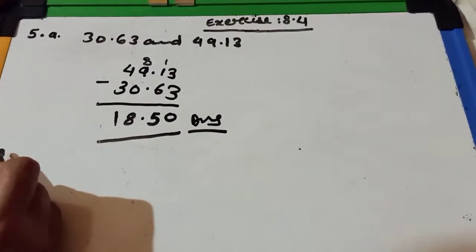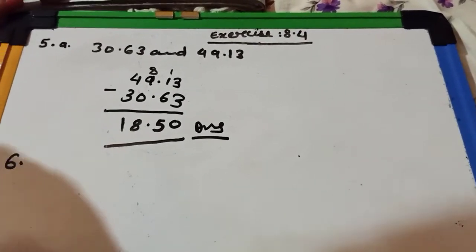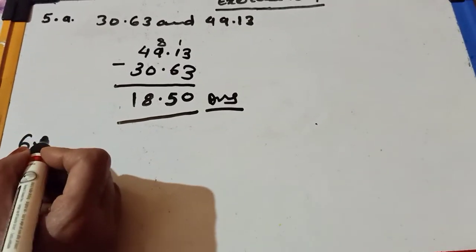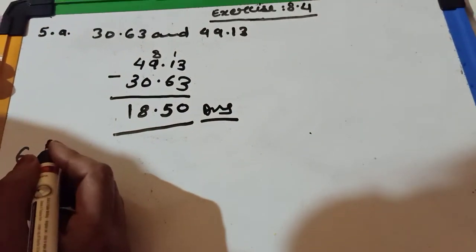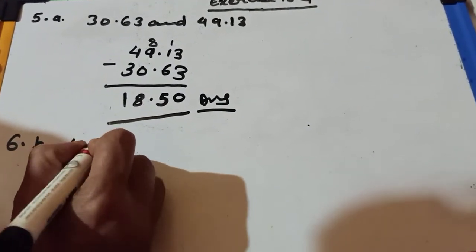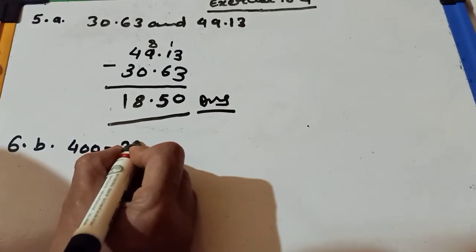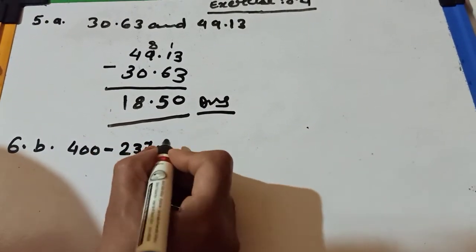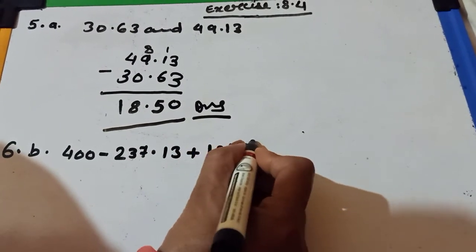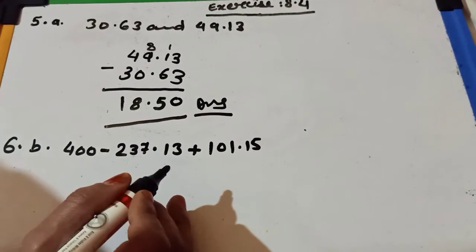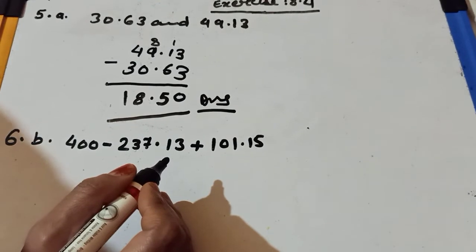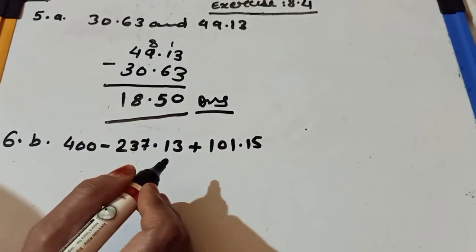Now I am taking question number 6. Find the value. It is like simplification. From this number I am taking 1B: 400 minus 237.13 plus 101.15. Children, how can we do this number? First we will take 2 numbers.